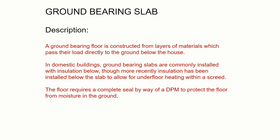In domestic construction, ground bearing slabs are commonly installed with insulation below them, though in some cases you might put insulation above a concrete slab. That would allow for underfloor heating to be embedded within a separate smaller slab called a screed. The floor requires a complete seal by way of a DPM — a damp proof membrane — to protect the floor from moisture rising up from the ground.